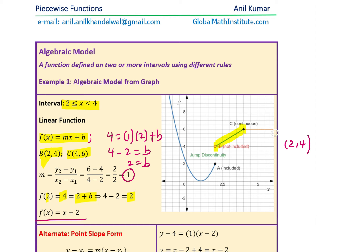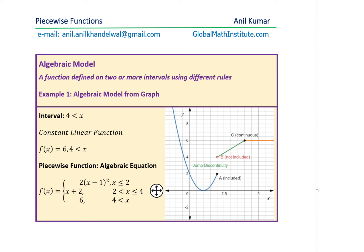The equation of the horizontal line is y = 6, and we know this interval is from 4 to infinity, so f(x) = 6 for x > 4. Now we have our complete piecewise function defined in three intervals: f(x) = 2(x−1)² for x ≤ 2, f(x) = x + 2 for the interval between 2 and 4, and f(x) = 6 for x > 4. That is how you model from a given graph.